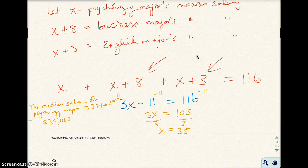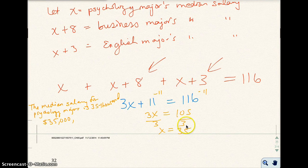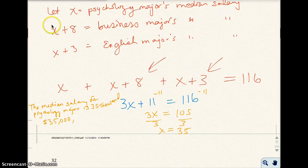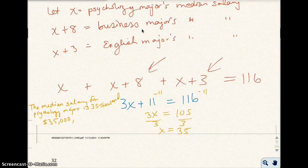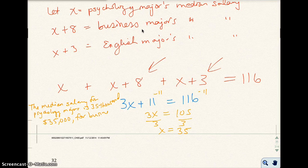The business majors, how do I figure that out? Well, if x is 35, and I add 8 to that, that would be the business majors. So median salary for business majors is 8 plus 35, which is 43,000.